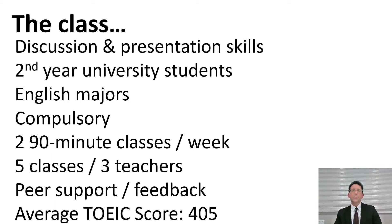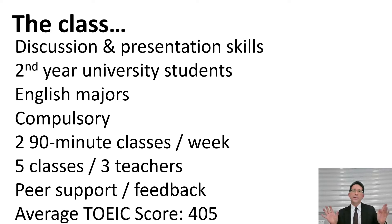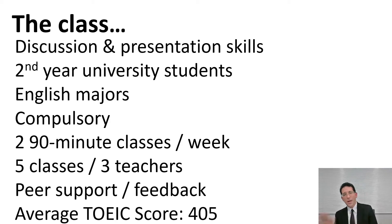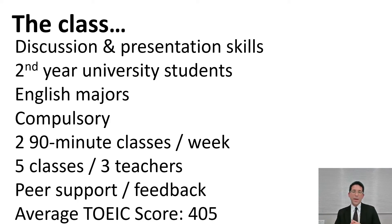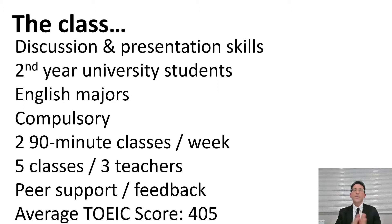I would like to explain a little bit about the class that we gave the scale to. This is a discussion and presentation skills-based class. It is twice a week, 90 minutes a week, and is roughly divided into half discussion skills and half presentation skills. These are second-year university students who are English majors. This is a compulsory class — the entire second year has to take it — five classes with three teachers. An important feature of the class is peer support and peer feedback. The average TOEIC score in their first year was roughly 400–405, but this is the second semester of their second year, so they would have more training and education in English.